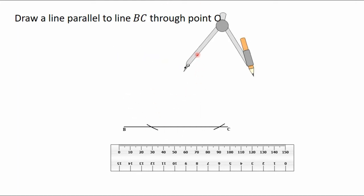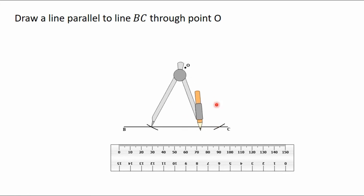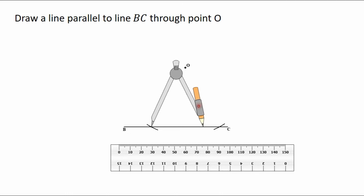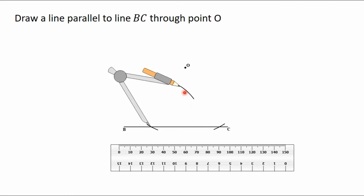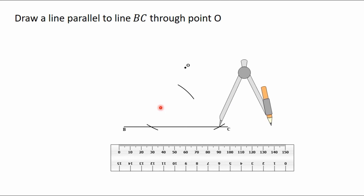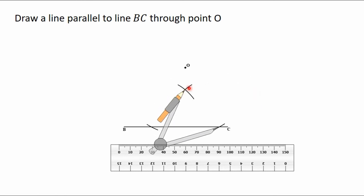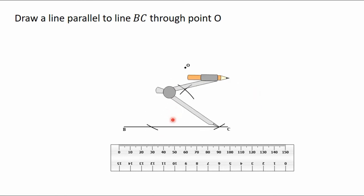Now after doing this, you put the needle of the compass on the point of intersection of the first arc and the line BC. Then you adjust your compass a little bit to a reasonable radius. You turn it and you construct an arc here. With the same radius, you move the needle of the compass to the point of intersection of the second arc and the line BC. You turn it and you construct an arc to intersect the first arc that you constructed.